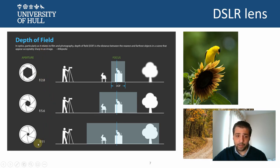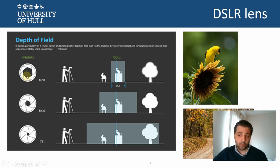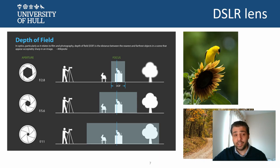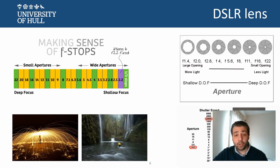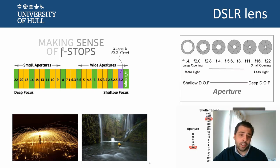The larger the depth of field is, the larger the f is. So it is inversely proportional — the larger the aperture is, the shorter the depth of field. Now it gets a little more complicated. We have other elements to take into consideration: for example, the shutter speed, the aperture we have talked about, and the depth of field.